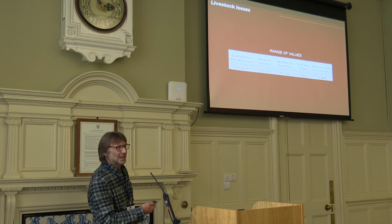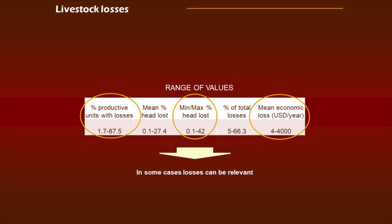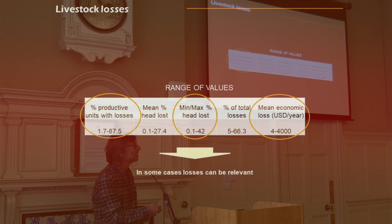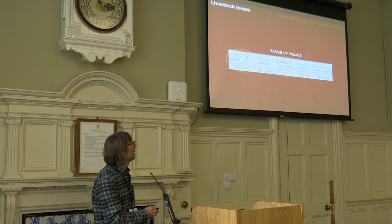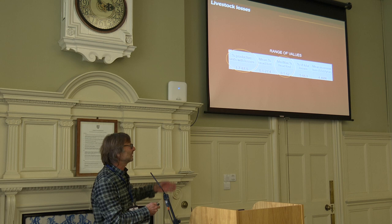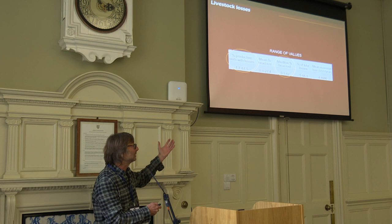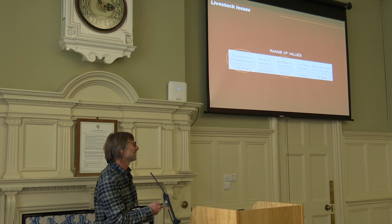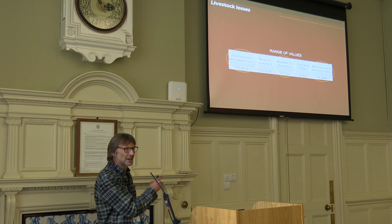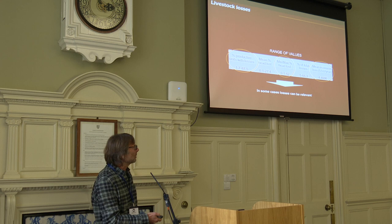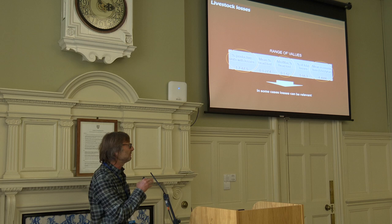However, these are mean values, and if we look a little deeper we see huge variation. The percentage of ranches with losses ranges from 1.7% to 87.5% of all ranches in a given area — from almost none to almost all of them. The mean and maximum percentage of head loss is also very variable, from no losses at all up to 32%. Economic loss data is particularly scarce. The conclusion is that in some cases losses can be very relevant, especially for the local people affected.